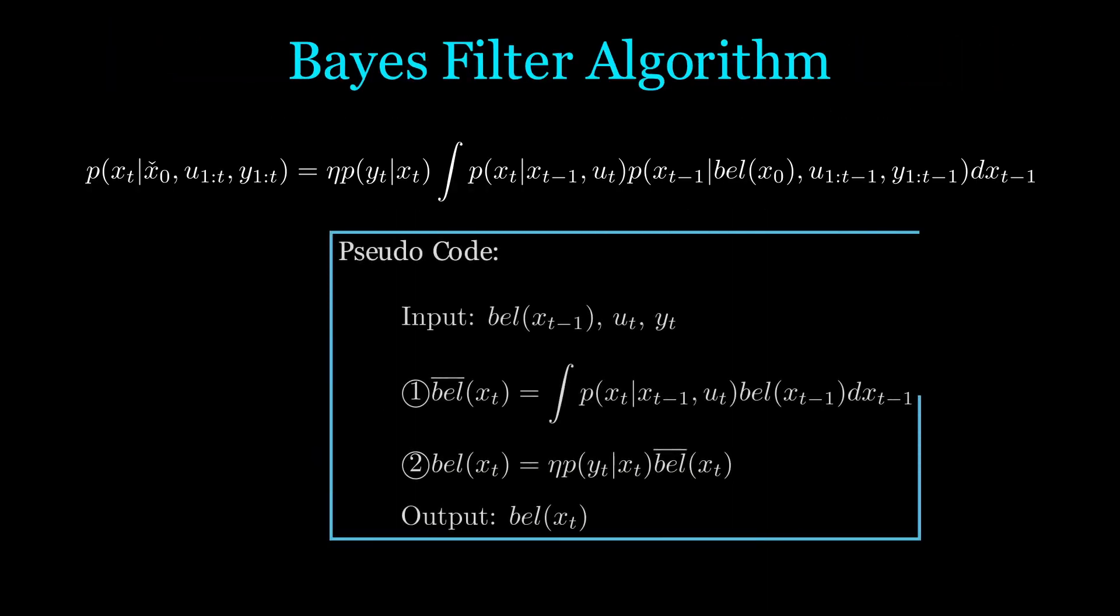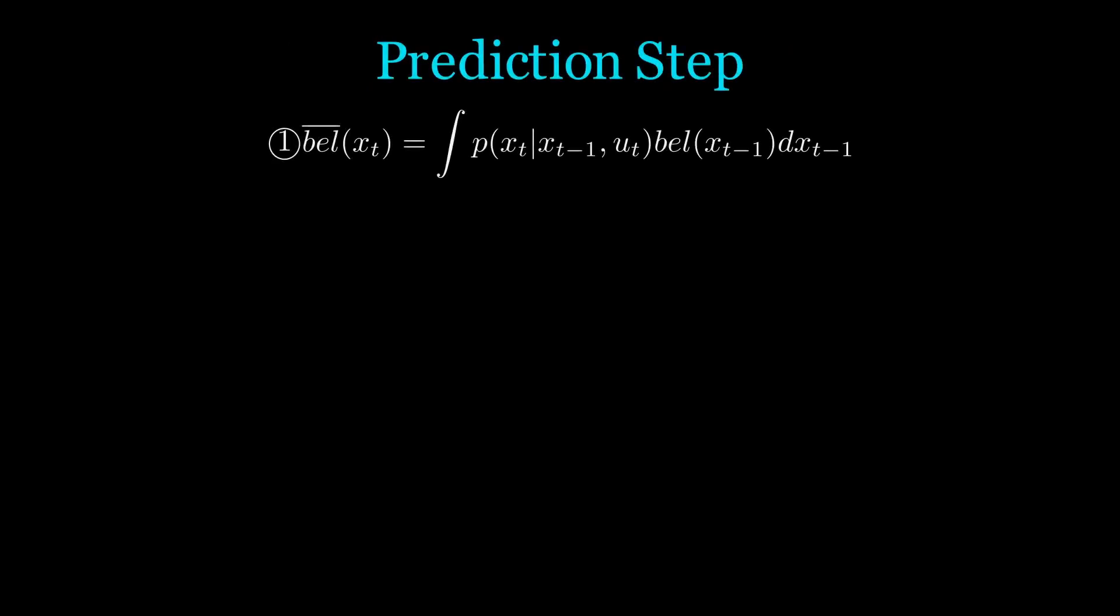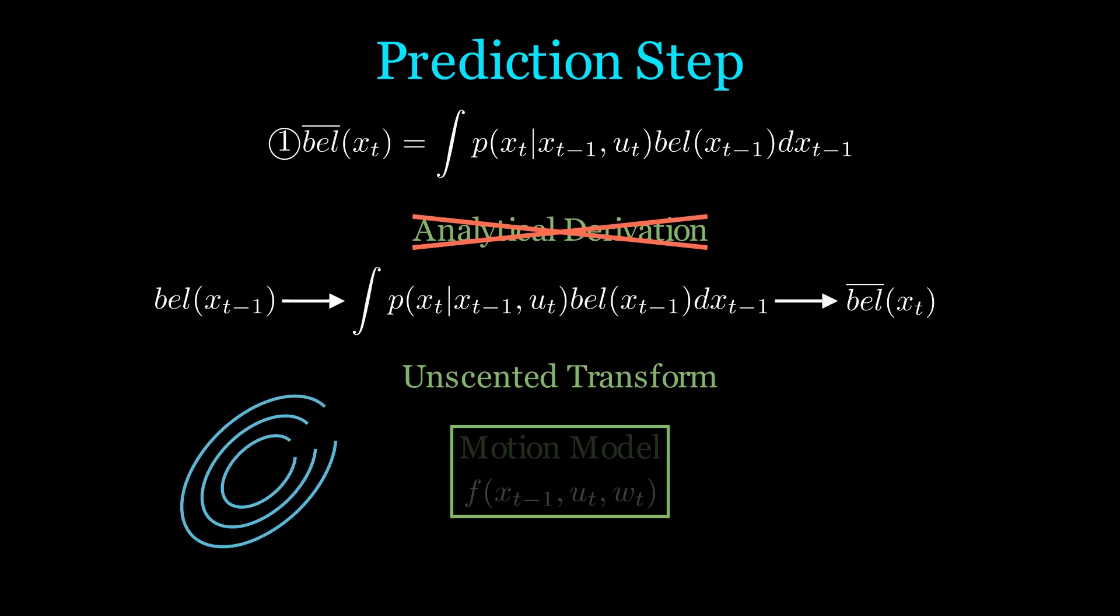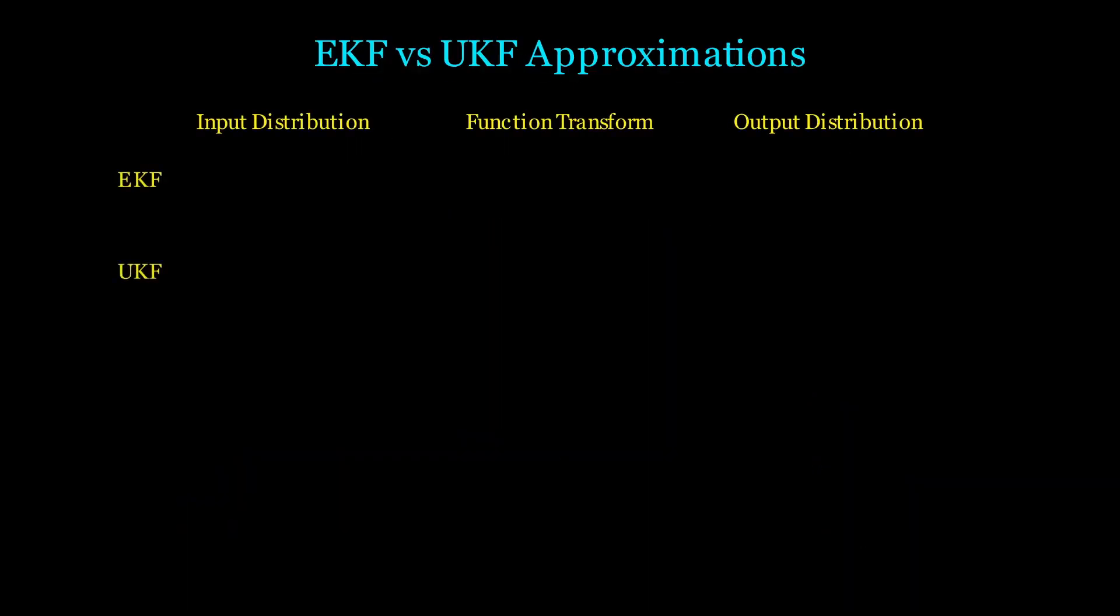To derive a specific filter from the Bayes filter, recall that we need to perform a prediction and a correction step. In the prediction step, we no longer need to analytically derive the equations. Instead, we'll overcome this with sampling. We don't even really need to care about our f function anymore. We can treat it as a black box function. This is why we no longer require assumptions on our noise. We have a Gaussian input distribution, which we will intelligently sample points from. We pass these sample points through our transformation function and then compute the best Gaussian fit. Really consider this statement for a second.